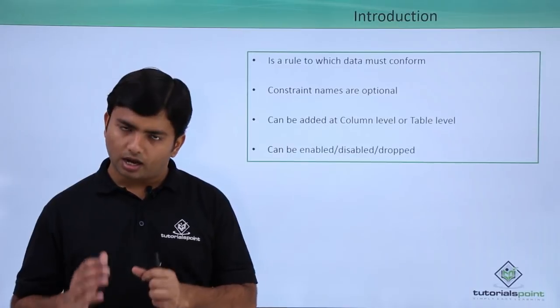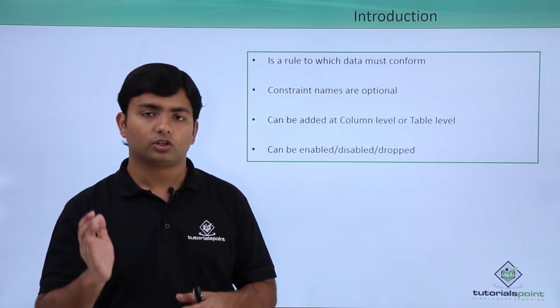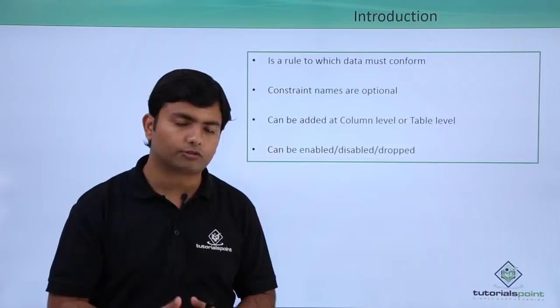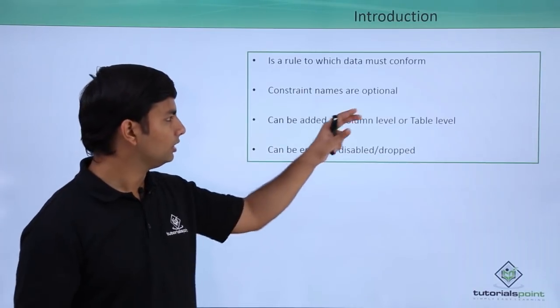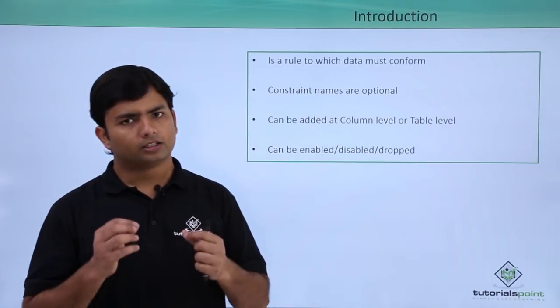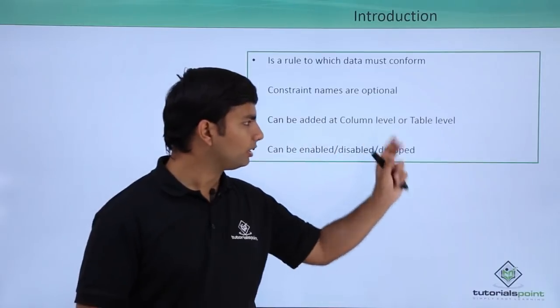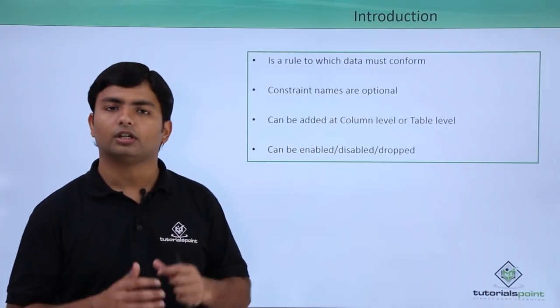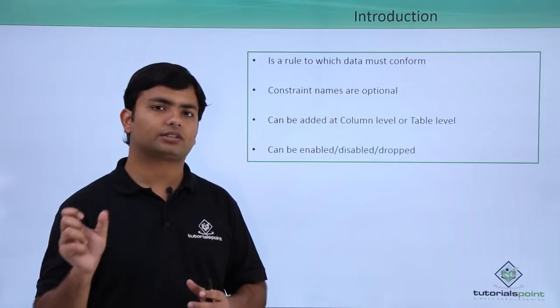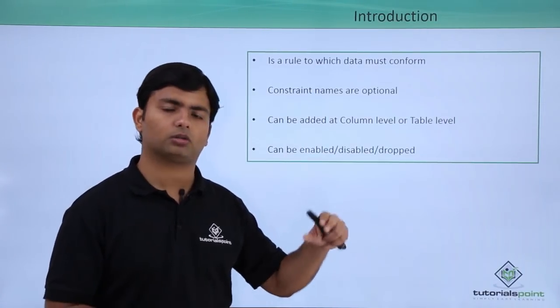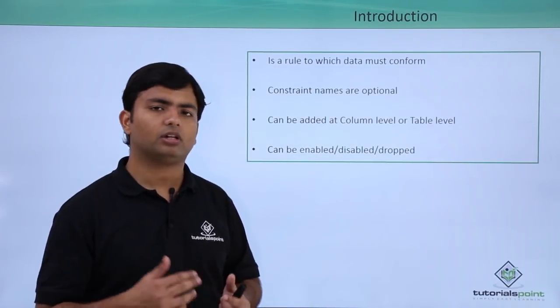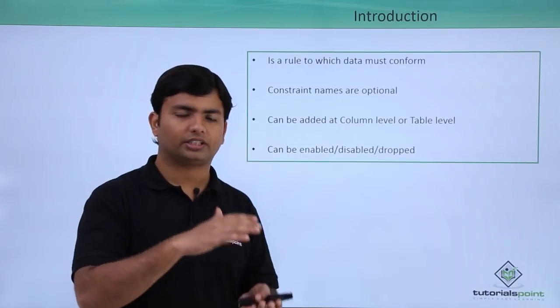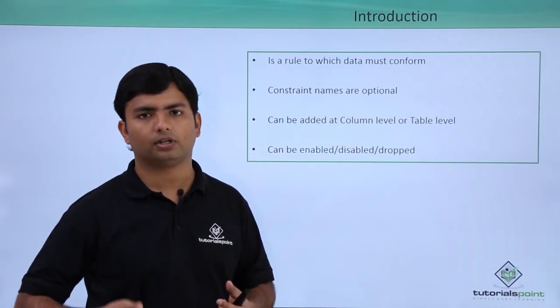But after creating all the columns, if at the last you want to specify all the list of constraints, that will be the table level. The major difference between the column level and table level constraints is that at column level, a single constraint can be applied to a single column only. But at table level, you can share a single constraint with multiple columns.